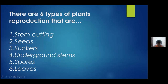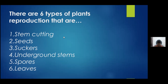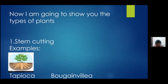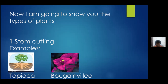There is a reproduction method called tissue culture too, which I'll explain after I show you the slides. Now I'm going to show you the types of plants for each reproduction. The first one is stem cutting — the examples are tapioca plant and bougainvillea plant.